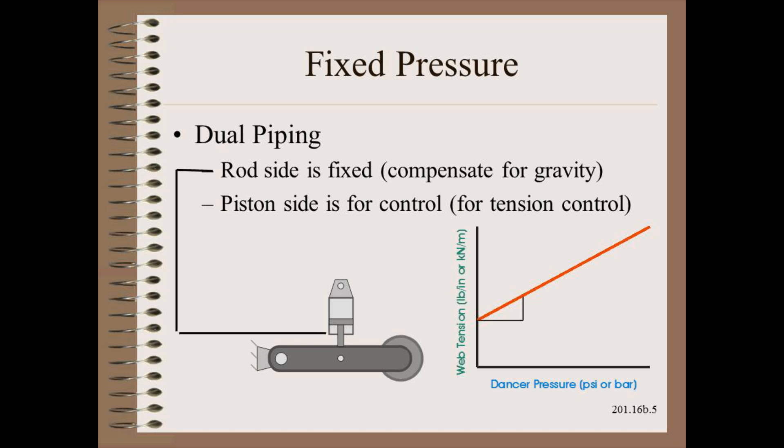but it is adjusted by a service engineer per procedure written by the design engineer. The usual motive is to compensate for gravity. In this case, roller and arm weight are compensated by rod side pressure.